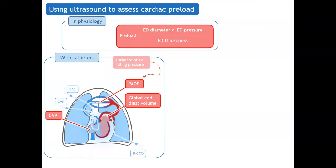With catheters, we can estimate at the right side the central venous pressure, and at the left side the pulmonary artery occlusion pressure. We can also, with transpulmonary thermodilution like with the PiCCO device, assess the global end-diastolic volume, which is the volume of the four cardiac chambers at end-diastole.